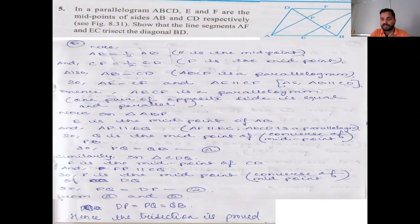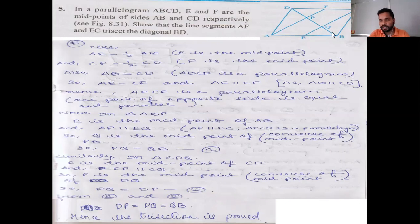In triangle CDQ, QC is parallel to FP (on the same lines AF and EC). F is the midpoint, so by the converse of the midpoint theorem, the parallel line from F bisects DQ at P. Therefore DP equals PQ. Combined with PQ equals BQ from result one, all three segments are equal — so AF and EC trisect diagonal BD.